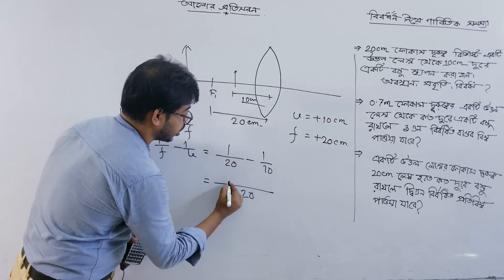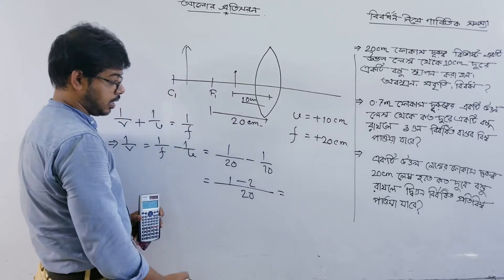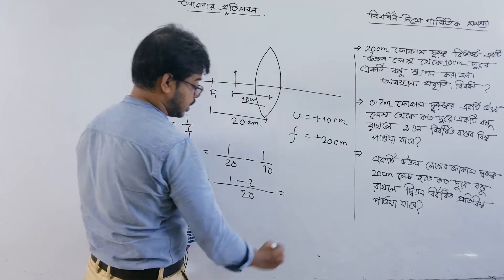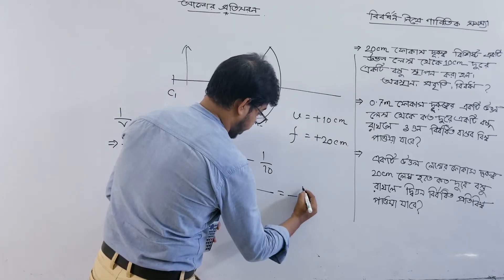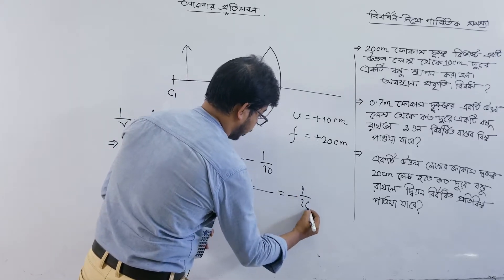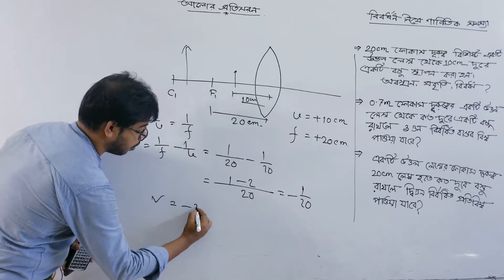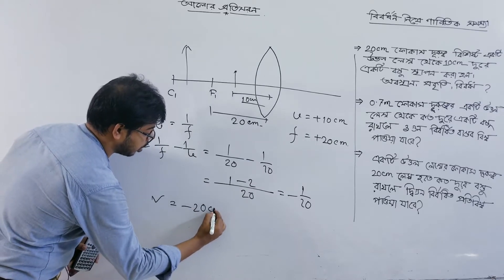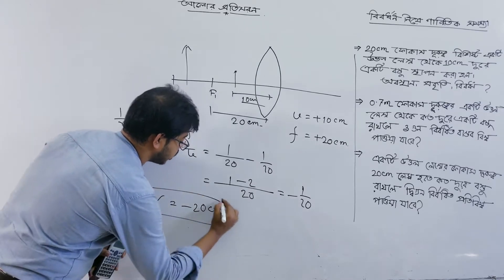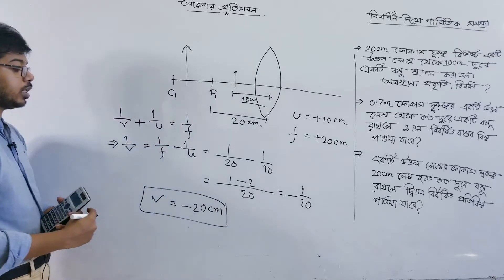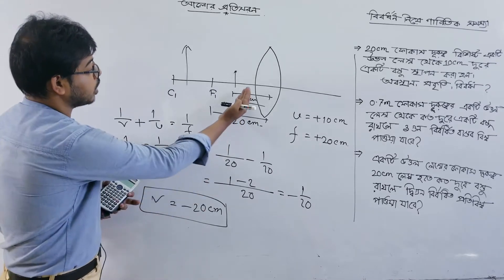That gives us 1 by 20 minus 2 by 20, which equals minus 1 by 20. Therefore V is minus 20 cm.